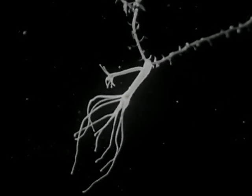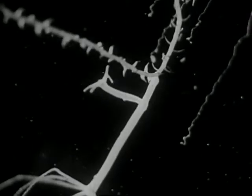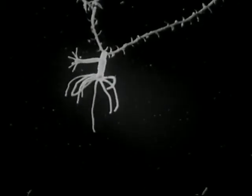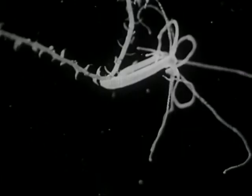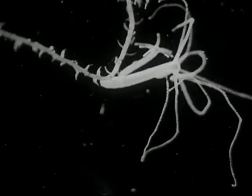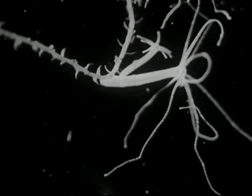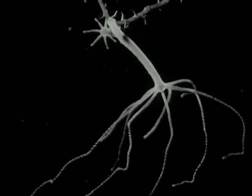Hydra may reproduce by budding. A new animal grows from the side of the parent. One animal may produce more than a hundred in a few days by this method of reproduction. Also, if one's cut into pieces, every piece will produce a new animal, like the mythical monster whose name it bears.